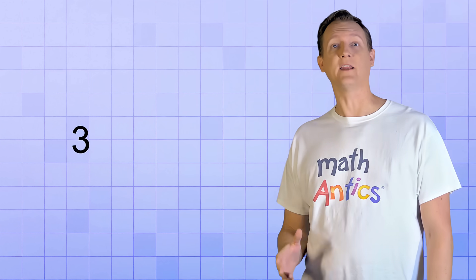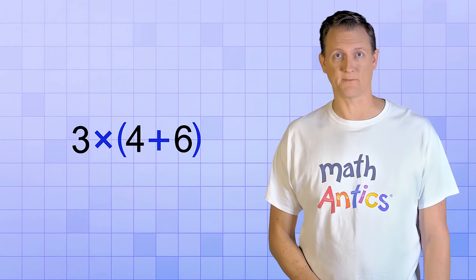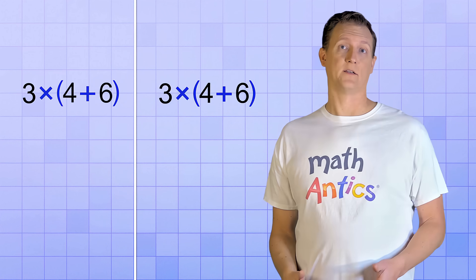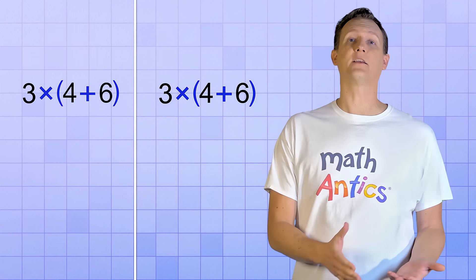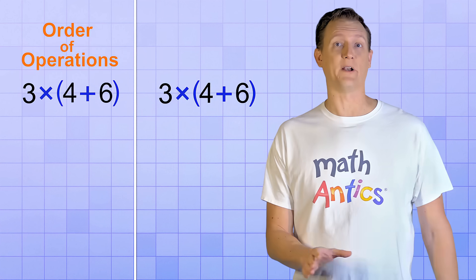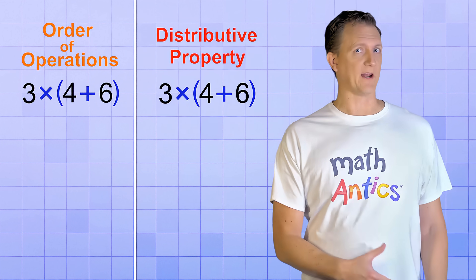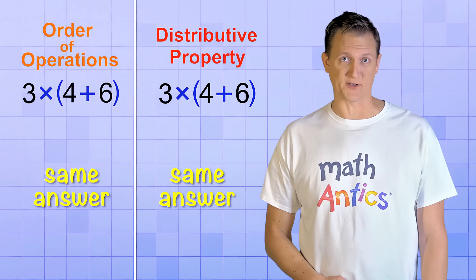To see what I mean, have a look at this simple arithmetic expression. We're going to simplify this expression in two different ways. The first way, we'll just use the basic order of operations rules that you already know. But the second way, we'll use the Distributive Property. And if we do the arithmetic right, both ways will give us the same answer.